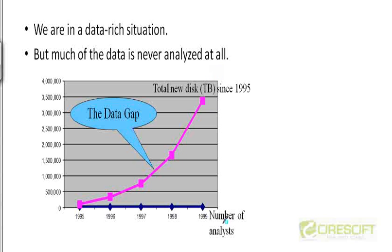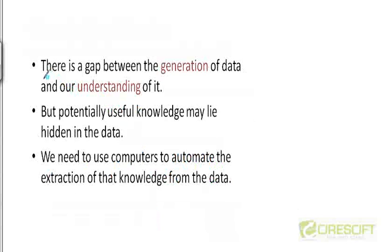If you look at the number of data analysts available to analyze that data, the number of analysts has gone up by only an insignificant amount — in fact, it's pretty much a flat curve. So you can see there is a gap between the amount of data being generated and the number of people there are to analyze it. This is called the data gap — a gap between the generation of data and our understanding of it.